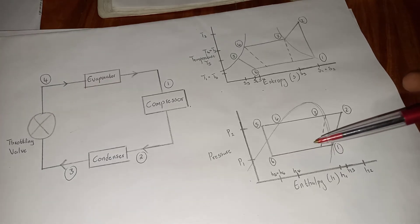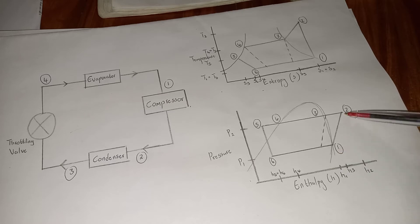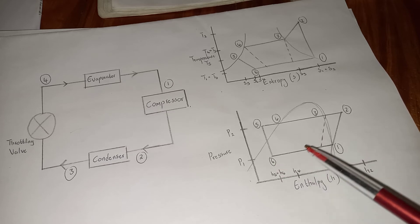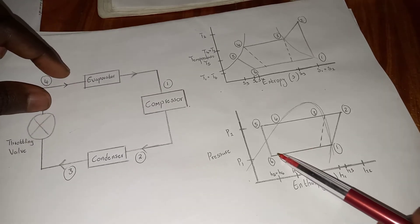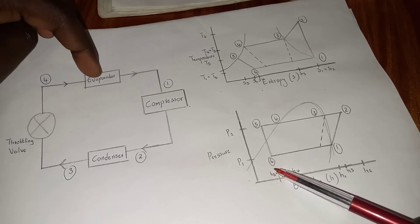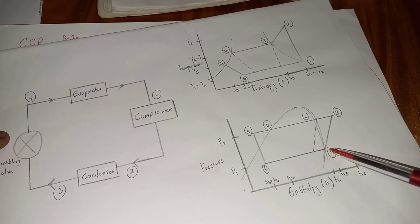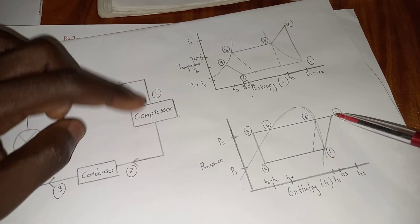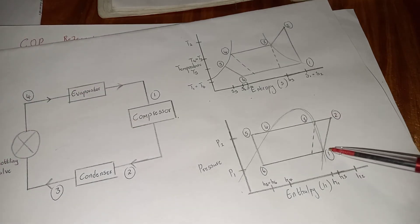When the enthalpy comes to the evaporator, it becomes the enthalpy of evaporation — hf — which is the latent heat energy. From point one to two is the external heat energy we need. From point six to one is the refrigeration effect, which goes from the evaporator to the compressor. At point six, the liquid is heated and turns to vapor, then enters the compressor to start the cycle again.